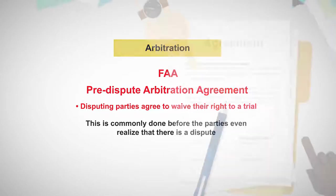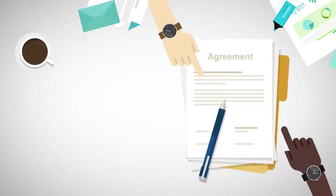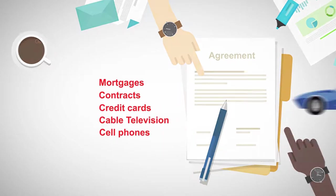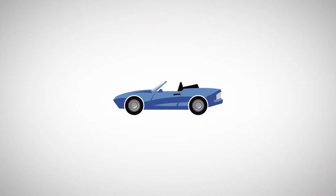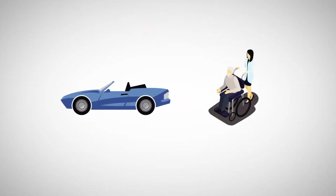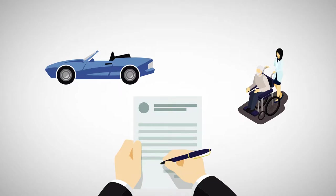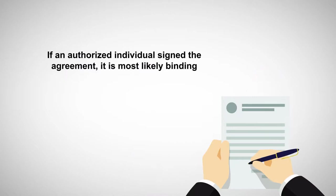Pre-dispute arbitration agreements are common in contracts that are negotiated and signed at the outset of a business relationship. Examples can be found in mortgages and in contracts for credit cards, cable television, or even that cell phone that you're using. It's almost impossible to buy a new automobile or have a loved one admitted to a nursing home without signing an agreement that contains an arbitration clause. If an authorized individual signed the agreement, it is most likely binding.